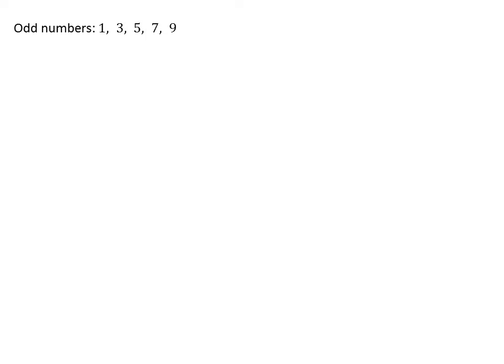As you can see, the fifth odd number is 2 times 5 minus 1. Similarly, the first n odd numbers are 1, 3, 5, and so on up to 2 times n minus 1.